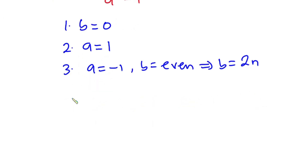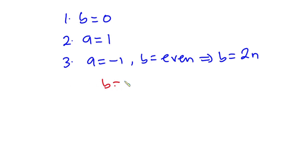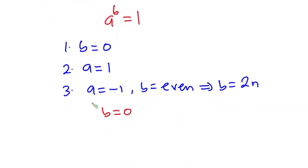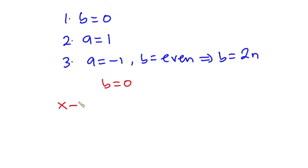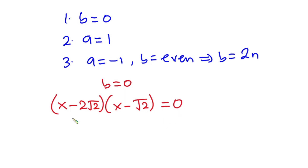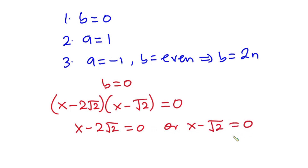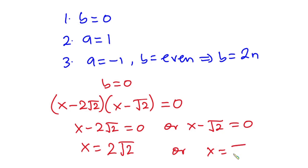Now let's focus on the first case, where b equals 0. From the equation, b equals (x minus 2√2)(x minus √2), and this should equal 0. This means x minus 2√2 equals 0, or x minus √2 equals 0. Making x the subject from each factor, we have x equals 2√2, or x equals √2.